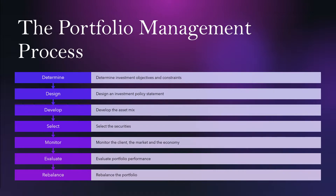The seven steps are: Determine Investment Objectives and Constraints, design an Investment Policy Statement, develop the Asset Mix, select the Securities, monitor the Client, the Market, and the Economy, evaluate Portfolio Performance, and rebalance the Portfolio. We're going to go through this process in order, starting with number one: Determine Investment Objectives and Constraints.